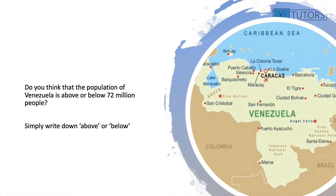Today we are going to have a look at a new topic. The first thing I would like you to do is start thinking about Venezuela. Write down what you think the population of Venezuela is — do you think it is above or below 72 million people? Just write down above or below.